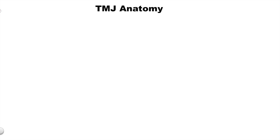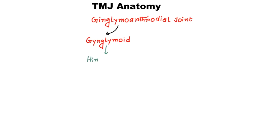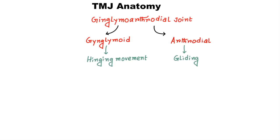Today we will discuss about Temporomandibular Joint Anatomy. The Temporomandibular Joint is certainly one of the most complex joints in the body. It is considered as a Ginglimo-Arthroidal Joint. It is a Ginglimoid Joint because it provides hinging movement in one plane; however, at the same time, it also provides gliding movements, that's why it is also called an Arthroidal Joint.